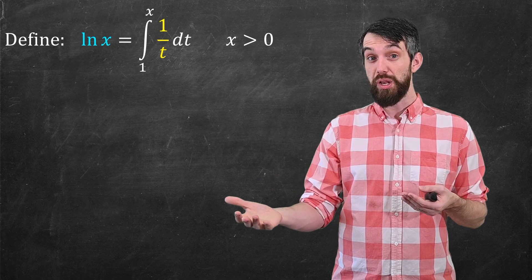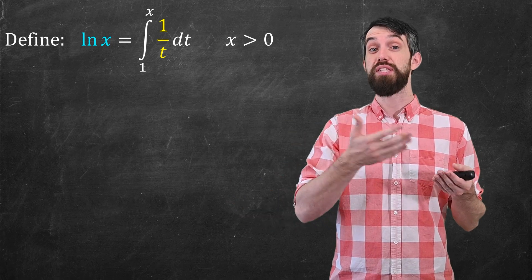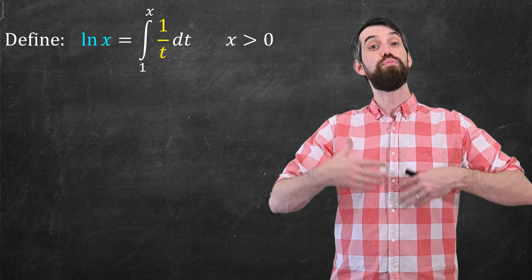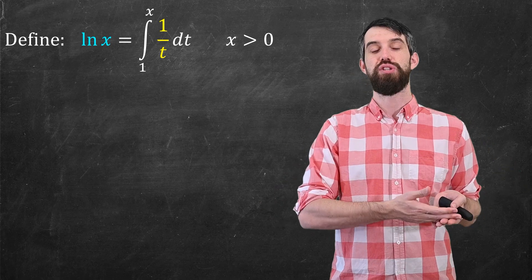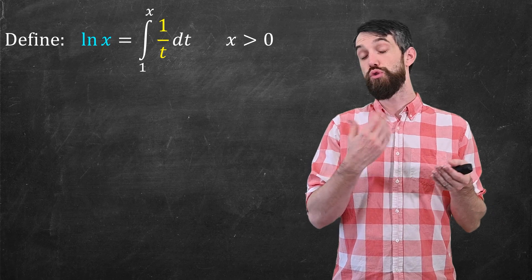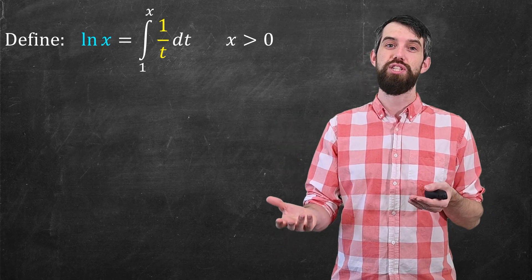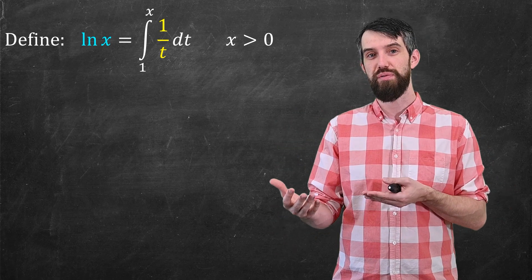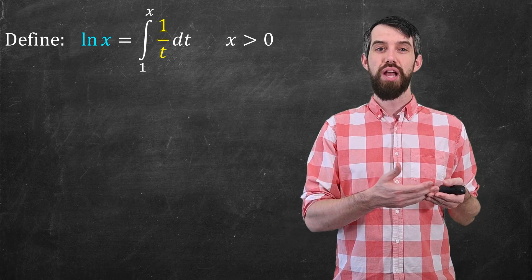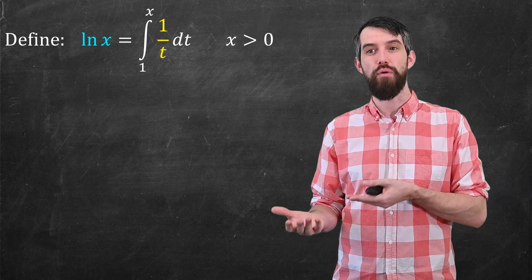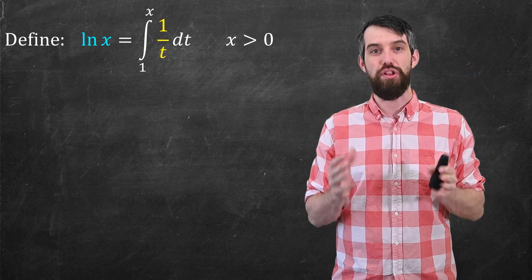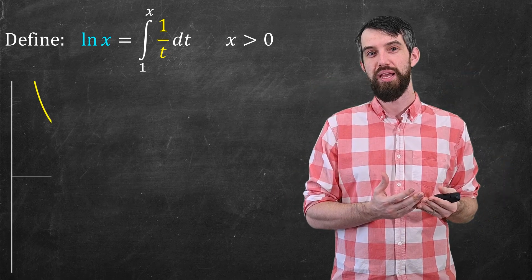You may have seen this formula written down in calculus 1, but at that time this equation represented a property of the logarithm function that you studied before. Indeed, if you took the derivative of the logarithm function by the limit definition of the derivative, you could recover that an antiderivative of 1 over x was logarithm of x. But now I'm saying this is the definition — this is what I'm defining logarithm of x to be.